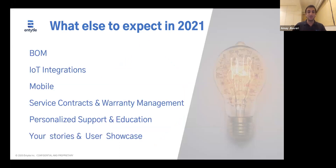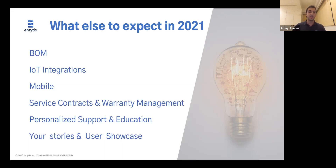That's not all — we are going to be launching a lot more in 2021. Things I'm really excited about include a bill of materials, enabling you to find and understand more information within our application. Mobile — yes, we will be launching a mobile version soon next year, we're already working on it and can't wait for you to get your hands on it. We're going to give you the ability to manage service contracts and warranties, similar to how you can manage assets today. And finally, we are going to continue our investment in support and education, give you more personalized support, and hold more events like this — where in the future, users can talk to each other and learn from each other, in both small and big events.